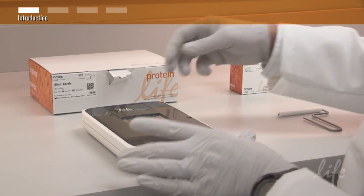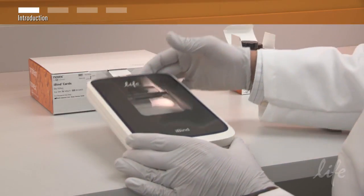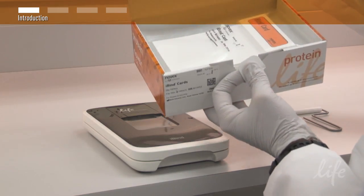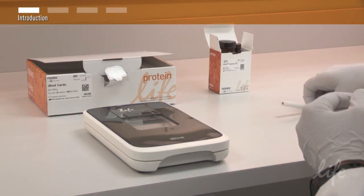The iBind Western system comes with an iBind device, iBind cards, an iBind solution kit, and a roller.